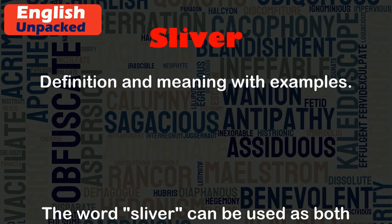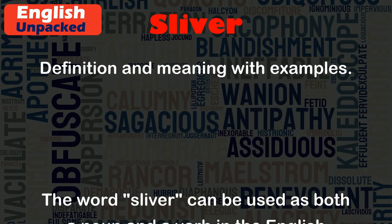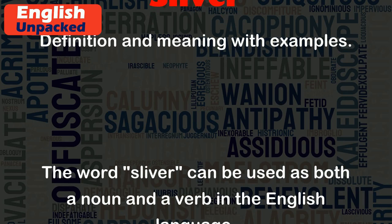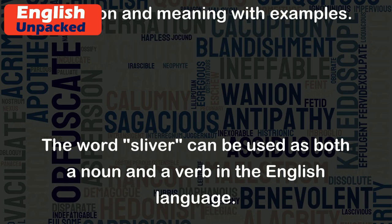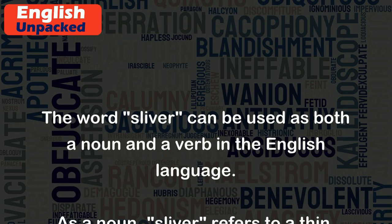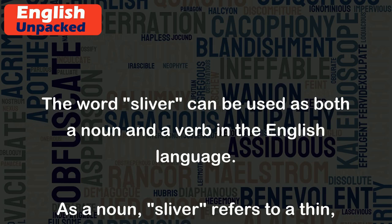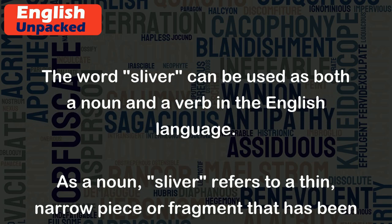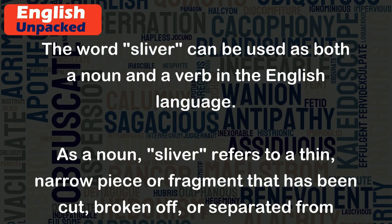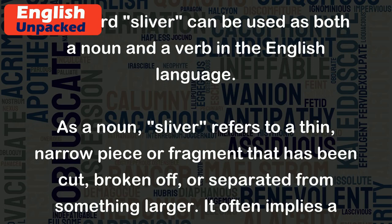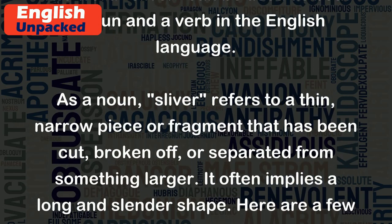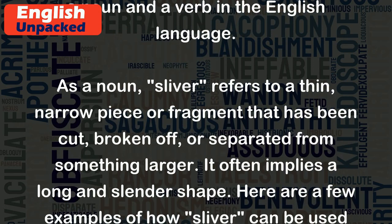The word 'sliver' can be used as both a noun and a verb in the English language. As a noun, 'sliver' refers to a thin, narrow piece or fragment that has been cut, broken off, or separated from something larger.